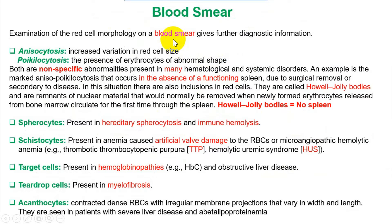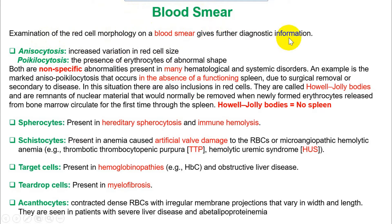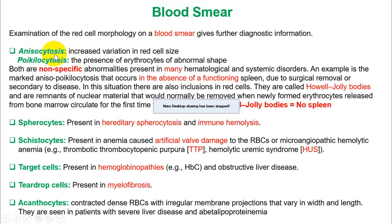After MCV and reticulocyte count, the next step is the blood smear. In most anemia questions, if you just look at the blood smear you will have the diagnosis. When diagnosing anemia, the three most important things are MCV, reticulocyte count, and blood smear.